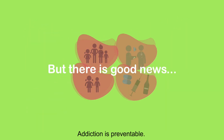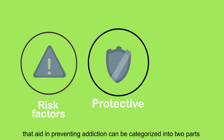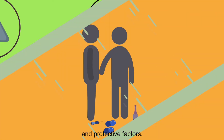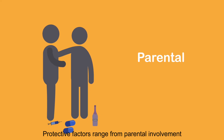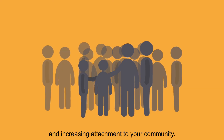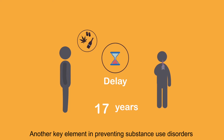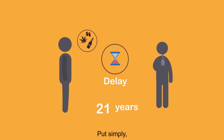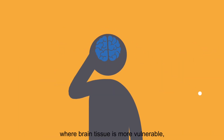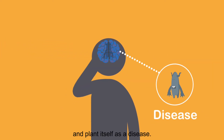But there is good news — addiction is preventable. The key factors that aid in preventing addiction can be categorized into two parts: risk factors and protective factors. Protective factors range from parental involvement, programs that improve self-control, limiting availability, and increasing attachment to your community. Another key element in preventing substance use disorders is to delay when use begins. Put simply, prevention is about delaying the onset of first use. In the adolescent brain, where brain tissue is more vulnerable, the hijacker is more prone to weaken the brain and plant itself as a disease.